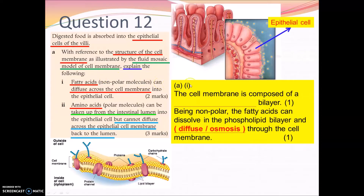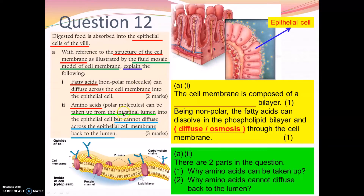For A1, about fatty acids as non-polar molecules: the cell membrane is composed of a phospholipid bilayer. Being non-polar, fatty acids can dissolve in the phospholipid bilayer. How do they move across the cell membrane? By diffusion or osmosis — you tell me. That's part A1.